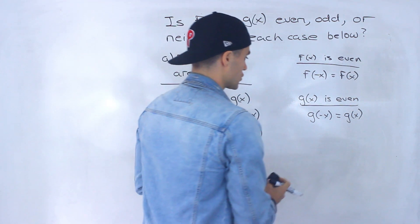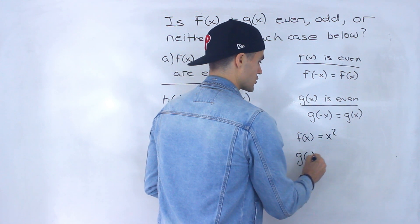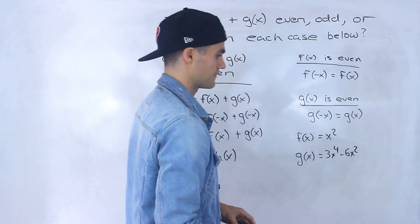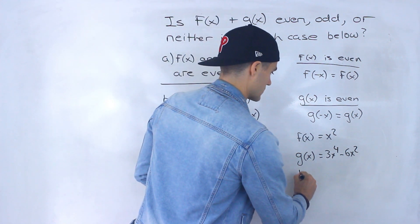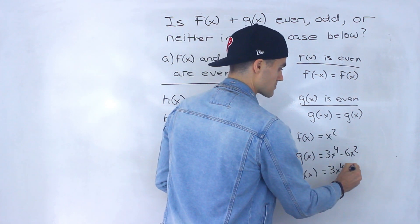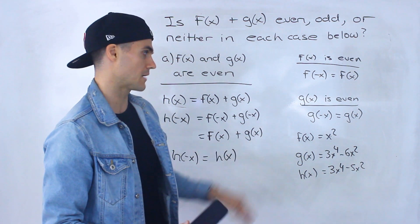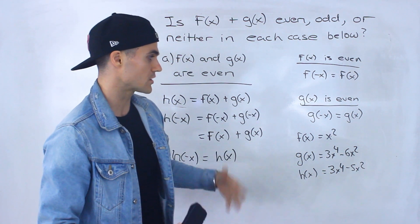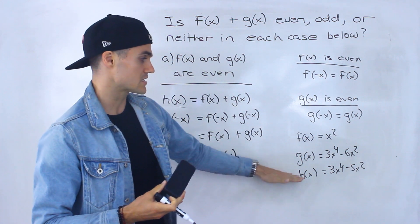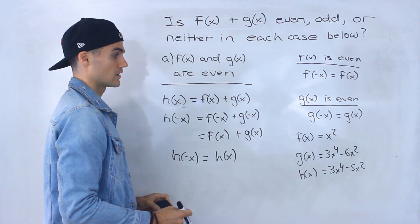You can show this through an example. Let's say we have an even function x squared and another even function 3x to the 4th minus 6x squared. Adding them gives h of x equals 3x to the 4th minus 5x squared. Notice all the exponents stay even. Whenever you add an even function to another even function, the sum will always be even with symmetry about the y-axis.